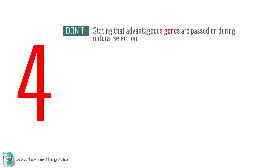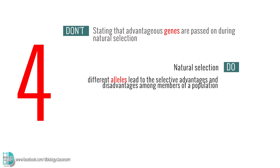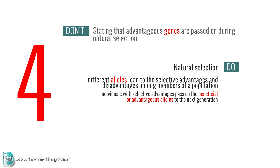Number 4: Stating that advantageous genes are passed on during natural selection. During natural selection, it is the different alleles that lead to the selective advantages and disadvantages among members of a population. So those individuals with selective advantages pass on the beneficial or advantageous alleles to the next generation.